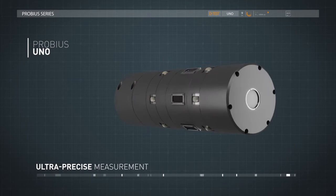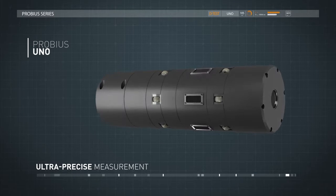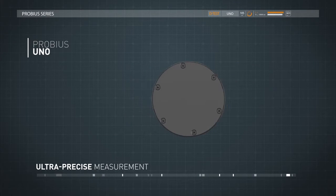ProBius Uno. Designed to fit custom diameters, it contains the most precise self-centering, high-precision modules and sensors available.